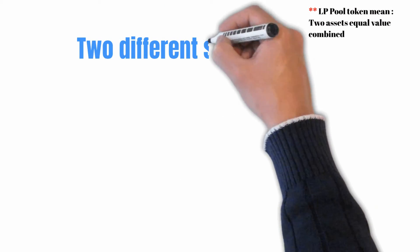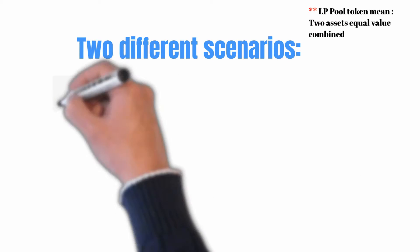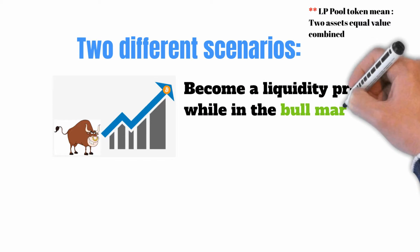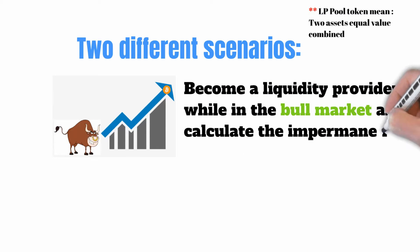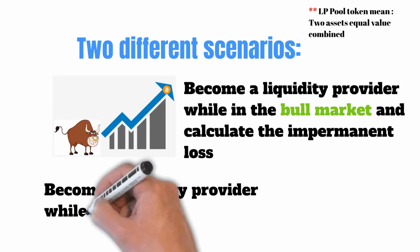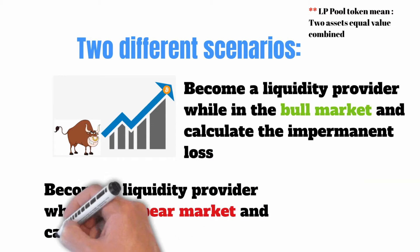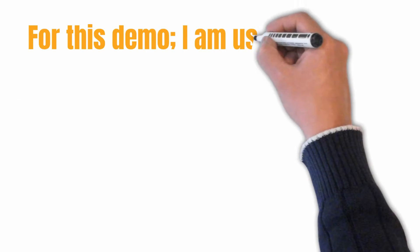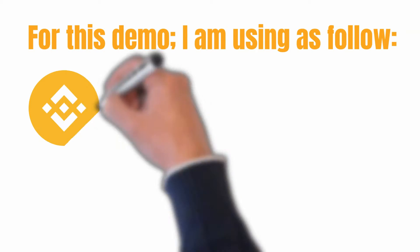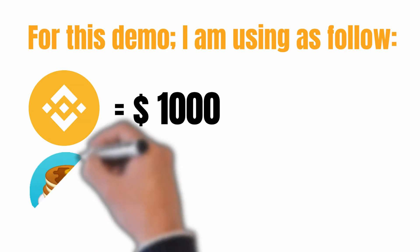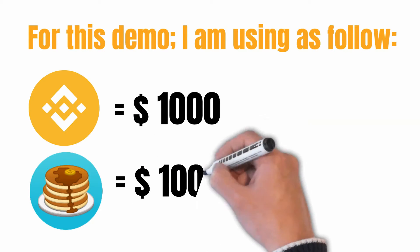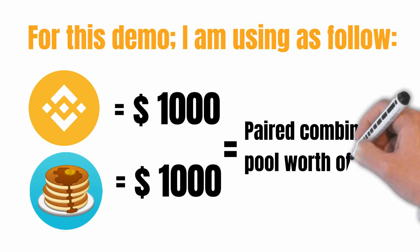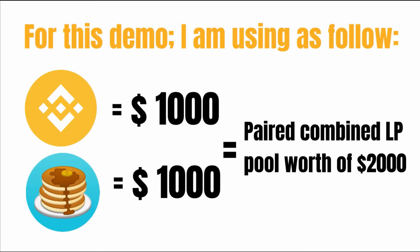In this video, I am going to take two different scenarios. For the first scenario, I will become a liquidity provider while in the bull market and calculate the impermanent loss. In the second scenario, I will be providing liquidity while in the bear market and calculate the impermanent loss. In this example, I am going to use BNB coin worth $1,000 and Cake token coin worth $1,000, so I will have a pair with an equivalent value of $2,000. With that being said, let's get started.